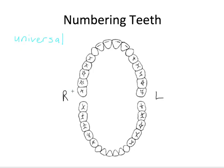So we start here, and this first tooth is number one, followed by number two, three, and so on. Once we get to the central incisors, these are eight and nine. Skipping ahead, we have 14, 15, and 16. There are 16 teeth in the adult dentition on top and also 16 on the bottom. Once we reach 16, we continue to form a clockwise circle — 17, 18, 19 — and skipping ahead to 30, 31, and 32. So 32 teeth in total.